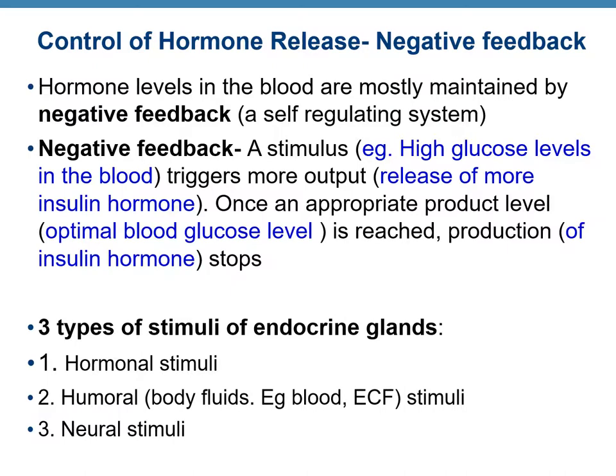The level of hormone in blood is usually maintained by a self-regulating system known as negative feedback. For example, a stimulus such as high glucose levels in blood triggers more output — the release of insulin hormone into the blood. Once the appropriate level is reached — in this case blood sugar brought down to an optimal level — production of the hormone stops, meaning insulin release stops.